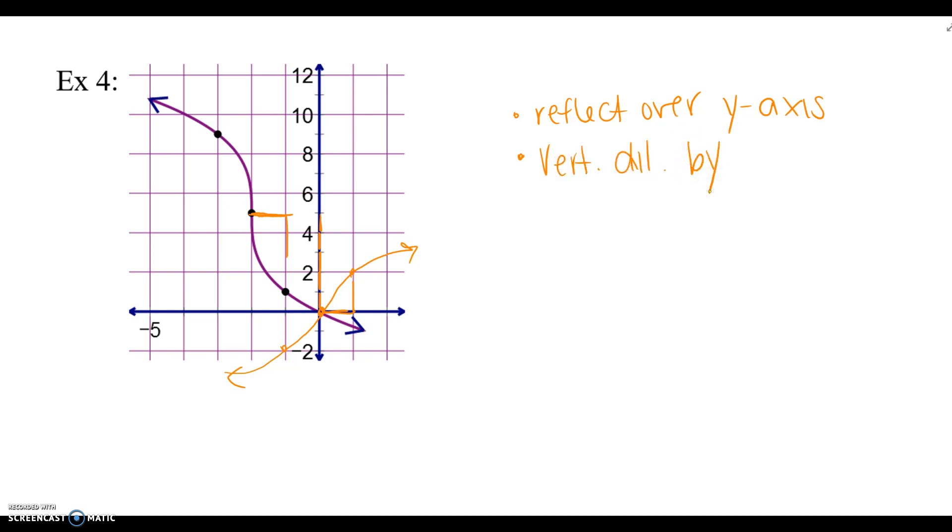And then, it's definitely been translated. You can just count. Left two, up five. So, I'm going to write my equation because I got 20 seconds. So, y equals four cubed root of negative and then put it in parentheses. X plus two plus five. Super fast. You want it in parentheses so you don't mix up your translation.